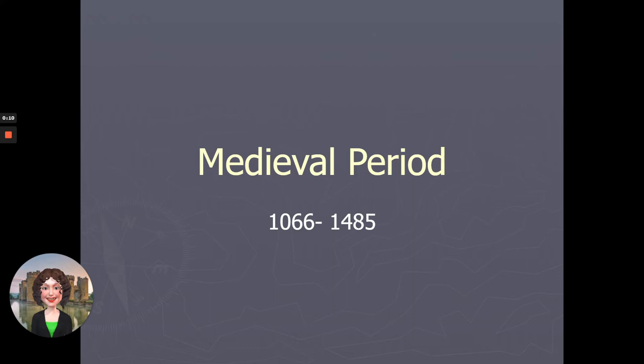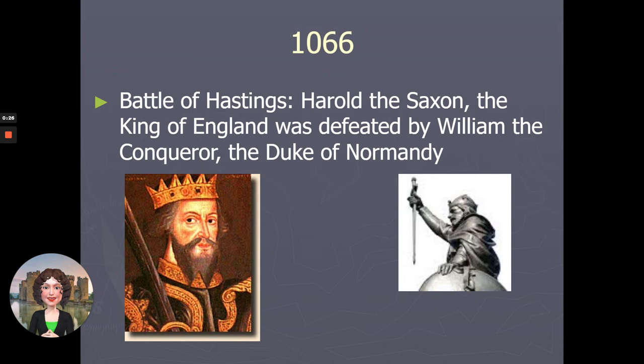Today we are going to talk about the background history for the medieval period, starting from the Battle of Hastings in 1066 to the beginning of the Renaissance in 1485. We already know about the Battle of Hastings — this is when the Anglo-Saxon period really comes to an end and the medieval period begins.